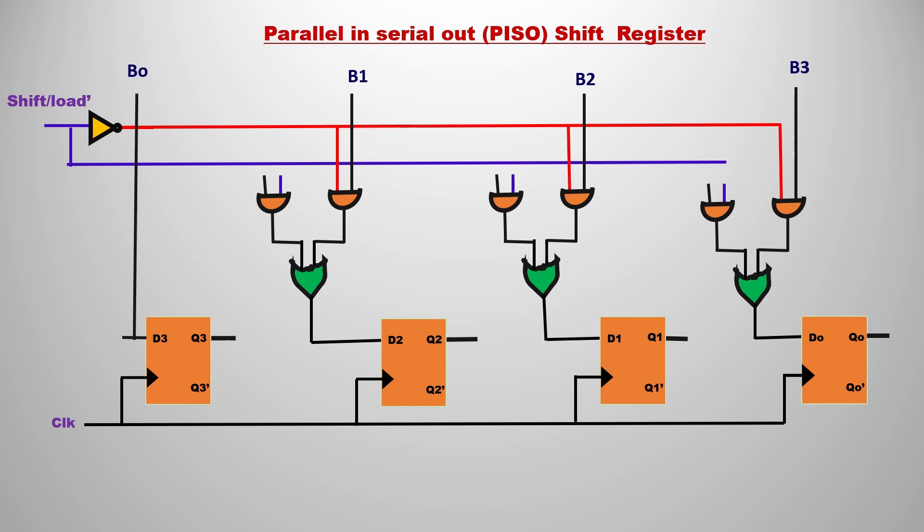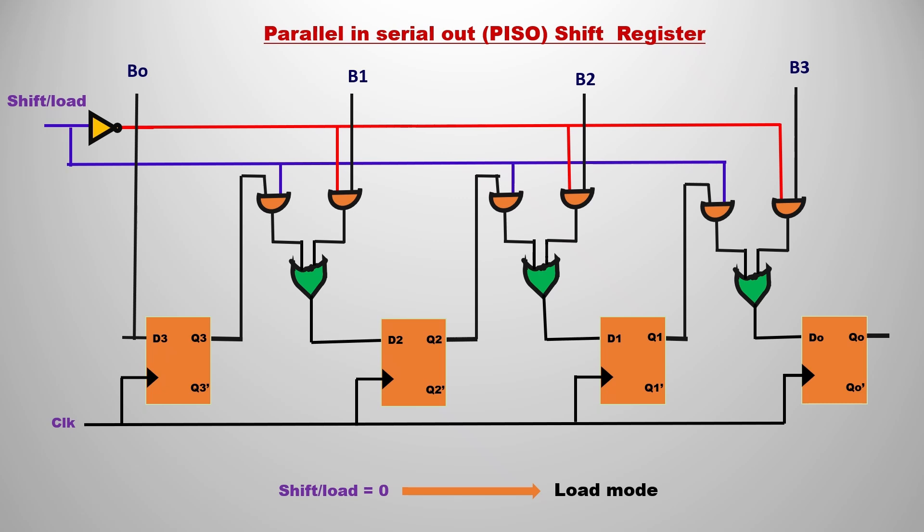The third combination is also connected directly to the complement of shift/load. For the first AND gate in each combination, the shift/load signal connects directly. The second input of the first AND gate in the first combination connects to Q3, Q2 connects to the second combination's first AND gate, and Q1 connects to the third combination's first AND gate. This completes the full circuit.